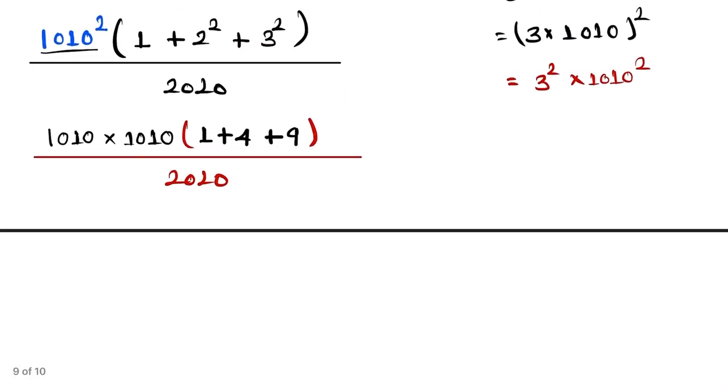Now here is 1010 into 1010 into, and here is the sum of 9, 4, and 1 is equal to 14, by 2020.